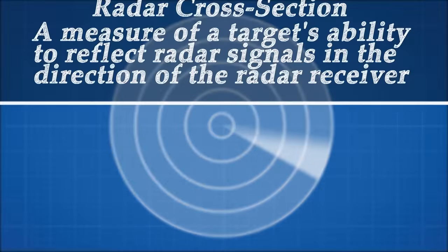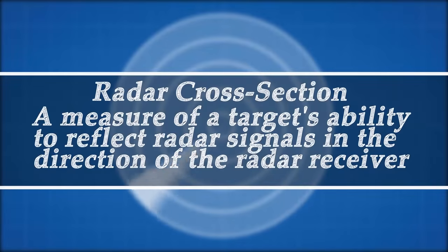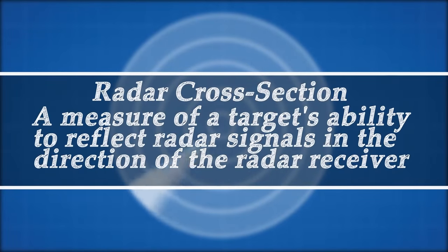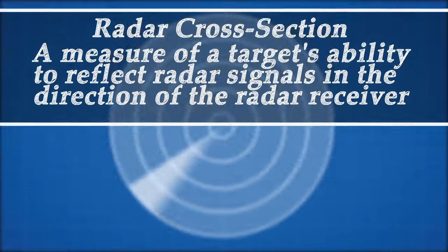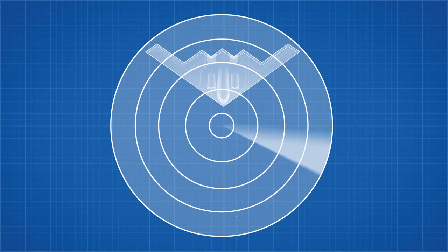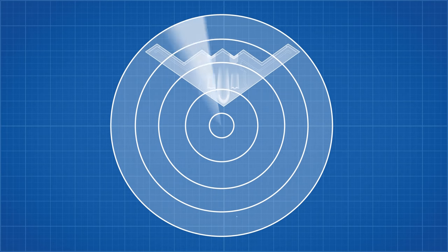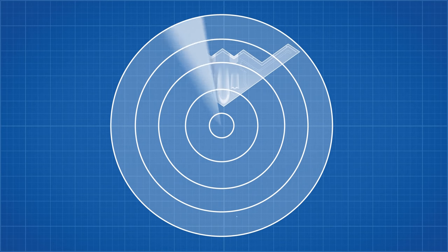The radar cross-section is a measure of how detectable an object is with radar. The size of the object is just one factor, which can be mitigated with clever engineering. The B-2 has a 52 metre wingspan, yet it has been reported to have the same radar cross-section as a large bird. So how does the B-2 manage to achieve this incredible feat?